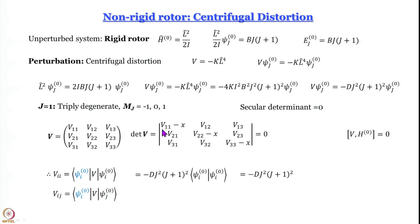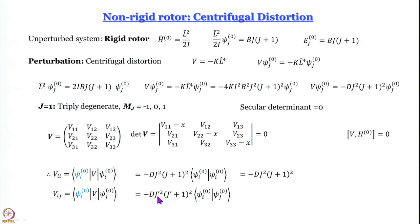For the off-diagonal element V_ij with i≠j: V·ψ_j'⁰ gives the eigenvalue −D·j'²(j'+1)², and the remaining integral is ∫ψ_i⁰·ψ_j⁰ dτ = 0 by orthonormality. So V_ij = 0 for i≠j.